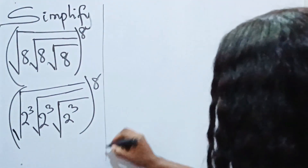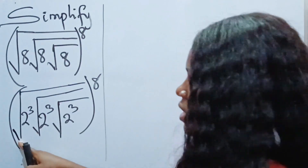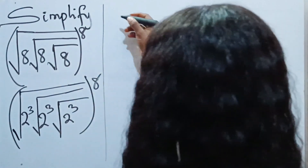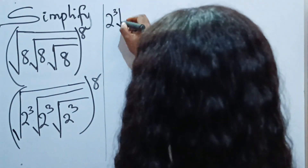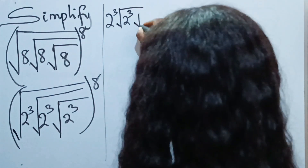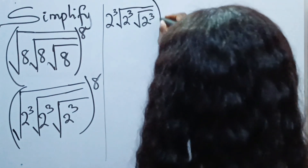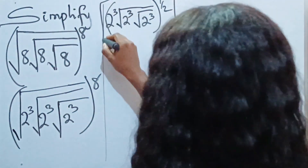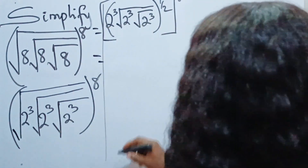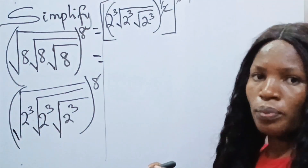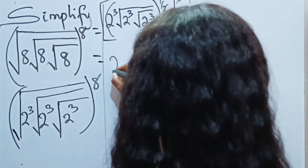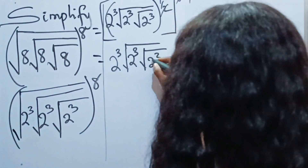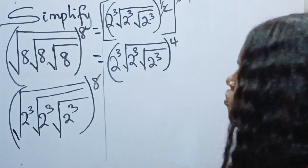We have a square root here. This square root is the same as raising to the power of one half. If we remove this outer square root, we have 2 to the power of 3, multiplied by the square root of 2 to the power of 3, multiplied by the square root of 2 to the power of 3 — but now with the first bracket having this square root removed, the outer power becomes 4 instead of 8. So everything is raised to the power of 4.